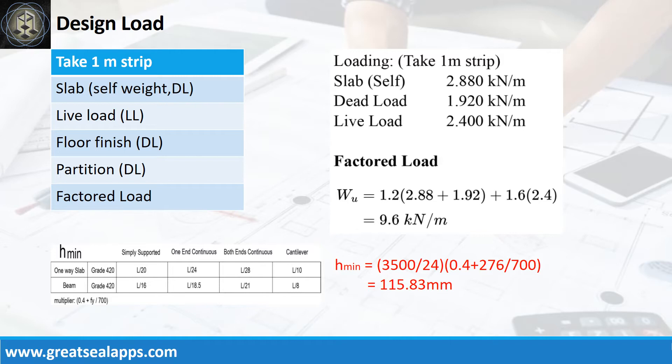The uniform load for 120 mm thick slab is 2.88 kN per meter. An office live load is 2.4 kN per meter. Other dead load like floor finish and partition is 1.92 kN per meter for a factored load of 9.6 kN per meter.